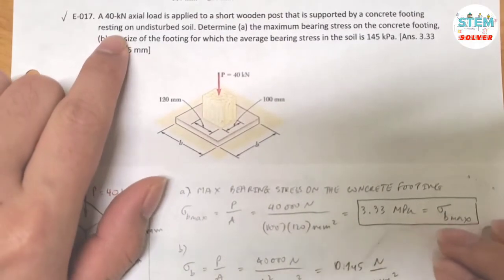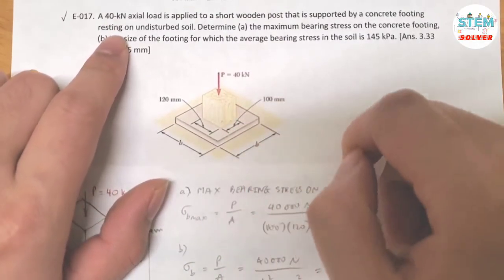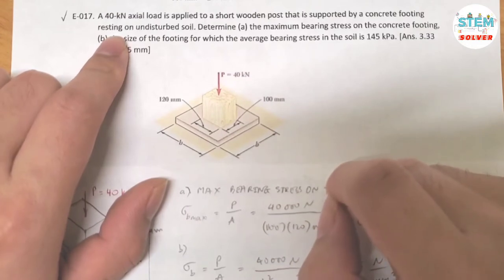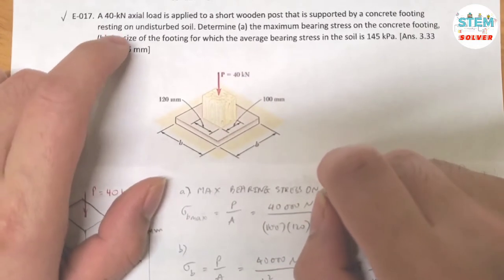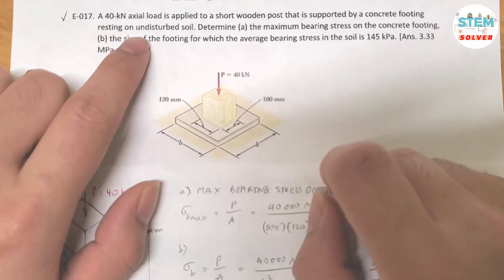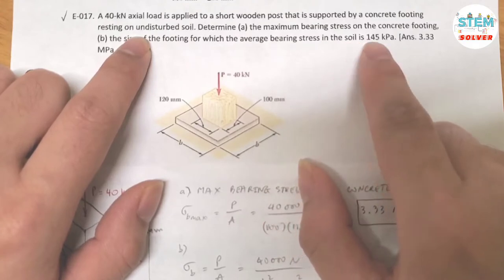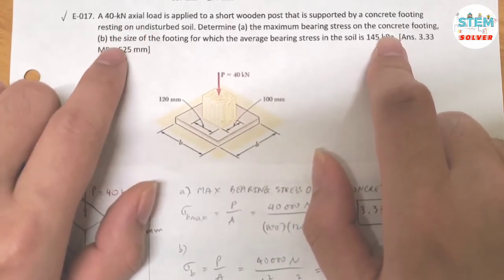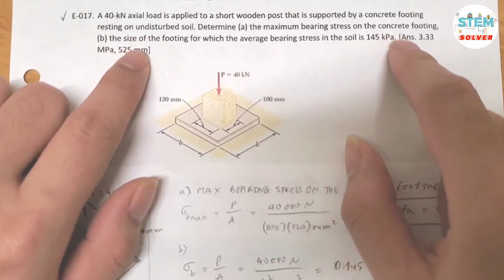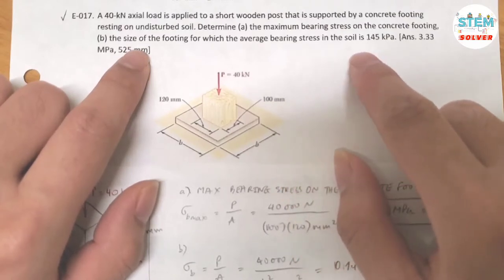A 40 kN axle load is applied to a short wooden post that is supported by a concrete footing resting on undisturbed soil. Determine part A, the maximum bearing stress on the concrete footing, and part B, the size of the footing for which the average bearing stress in the soil is 145 kPa.